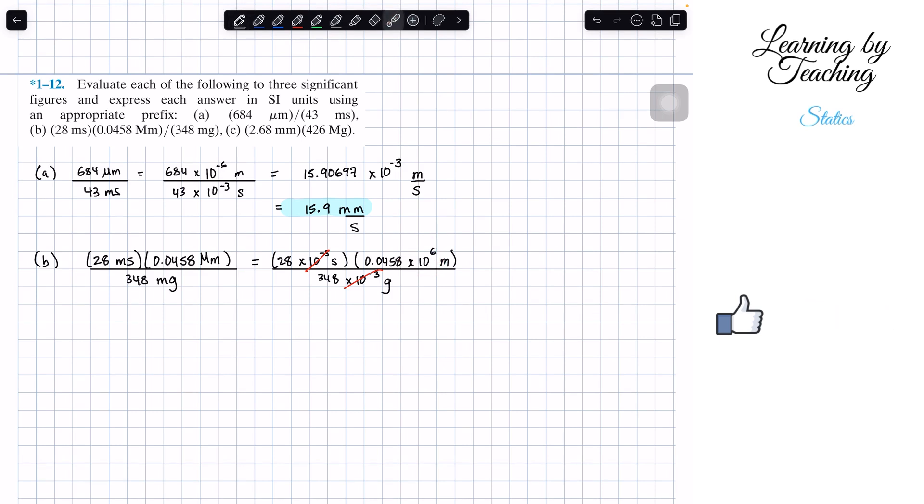And that way, our exponent form in this case is times 10 to the positive 6. So we're going to plug 28 times this number divided by 348 into our calculator. That's going to bring us a total of 0.00368505 and it keeps on going, times 10 to the positive 6. And the units we got is meters times seconds divided by grams.